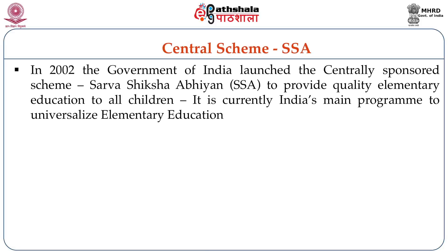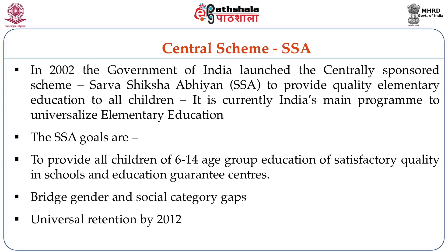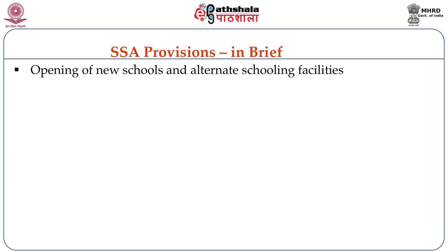In 2002, the Government of India launched the centrally sponsored scheme Sarva Shiksha Abhiyan (SSA) to provide quality elementary education to children. It is currently India's main program to universalize elementary education. The SSA goals are to provide all children in the 6 to 14 age group education of satisfactory quality in schools and education guarantee centers, to bridge gender and social category gaps, and to create universal retention by 2012.